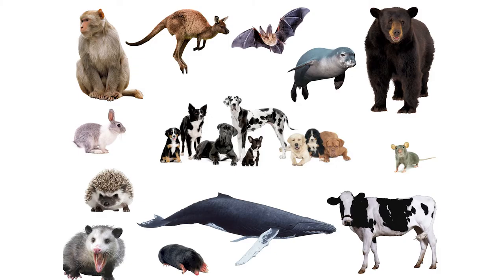We also see variation within species. All these dog breeds, just like Darwin's pigeons, are all members of the same species — a very variable species with a lot of variation.